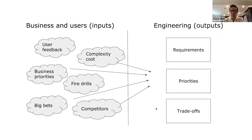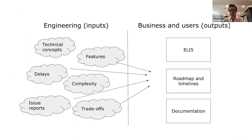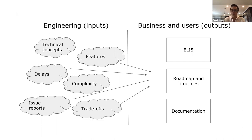On the other side, engineering will give you a bunch of inputs when they're actually building products. There are technical concepts that are really difficult to understand — engineering understands them perfectly, product managers can mostly understand them, but business users and non-technical people may not understand anything. Features will often need explanations, there will be delays that need explaining, complexity baked into their approaches, architecture, and design. And when issues come up, how do you communicate those issues back to the business, executives, and users? You have to take all of these and give structured, non-ambiguous outputs to business and users.